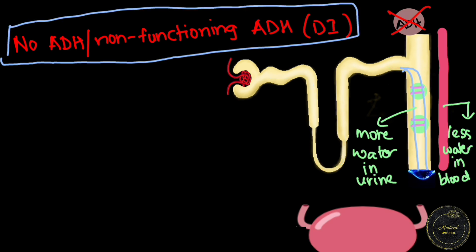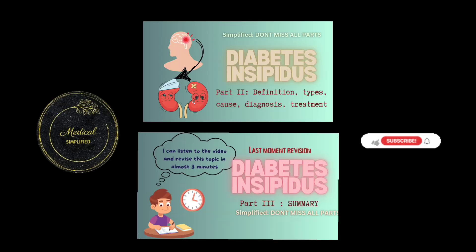Therefore, in diabetes insipidus, you have higher plasma osmolality, lower urine osmolality and polyuria. Details of the topic diabetes insipidus is present in part 2 of the series. Please go and watch that.